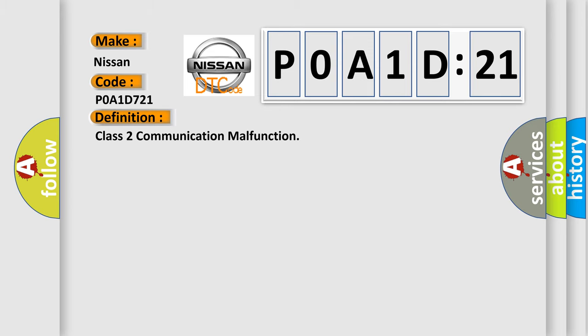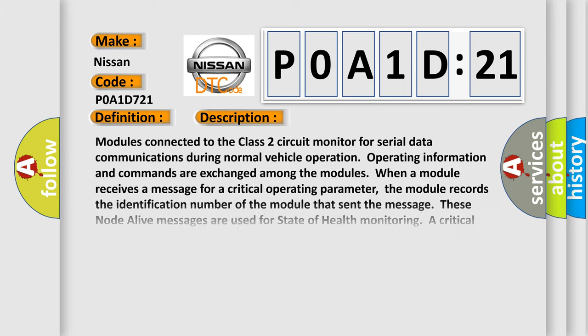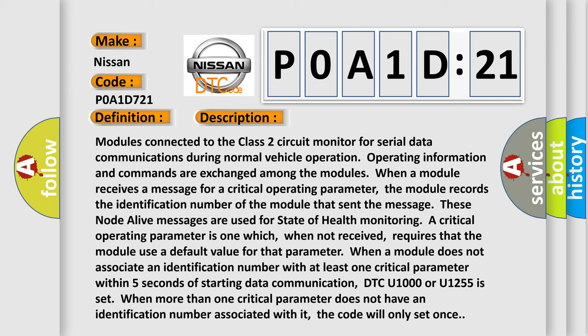And now this is a short description of this DTC code. Modules connected to the Class 2 circuit monitor for serial data communications during normal vehicle operation. Operating information and commands are exchanged among the modules. When a module receives a message for a critical operating parameter, the module records the identification number of the module that sent the message. These node alive messages are used for state of health.